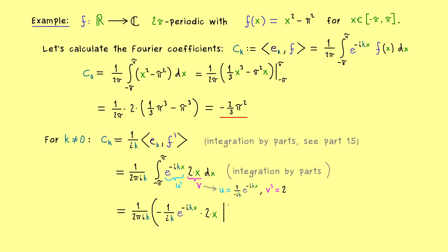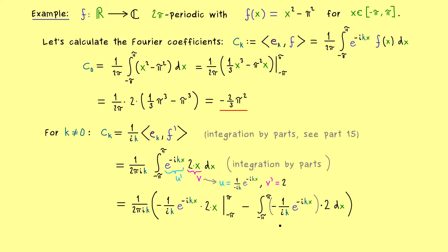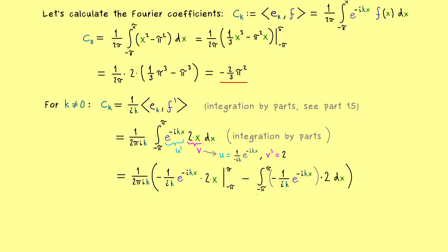Putting everything together for the integration by parts formula: first we have u times v evaluated at the limits — we multiply both functions and put in π and minus π. Then we subtract the integral of u times v′, which is just the integral of the exponential function. Since it goes from minus π to π, the value of this integral is zero, because the antiderivative is the exponential function again, which is 2π-periodic.